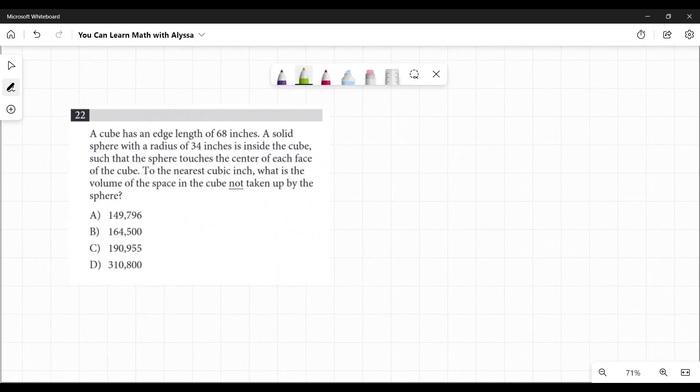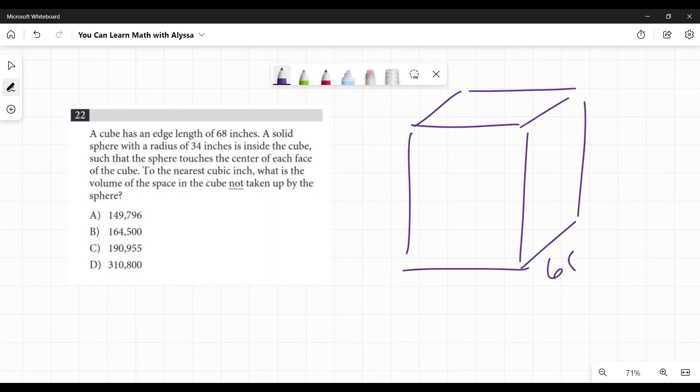Okay, number 22. A cube has an edge length of 68 inches. I'm a drawer, I always want to draw immediately when they start giving me things. 68, it's a cube, so all sides are 68. Got it.